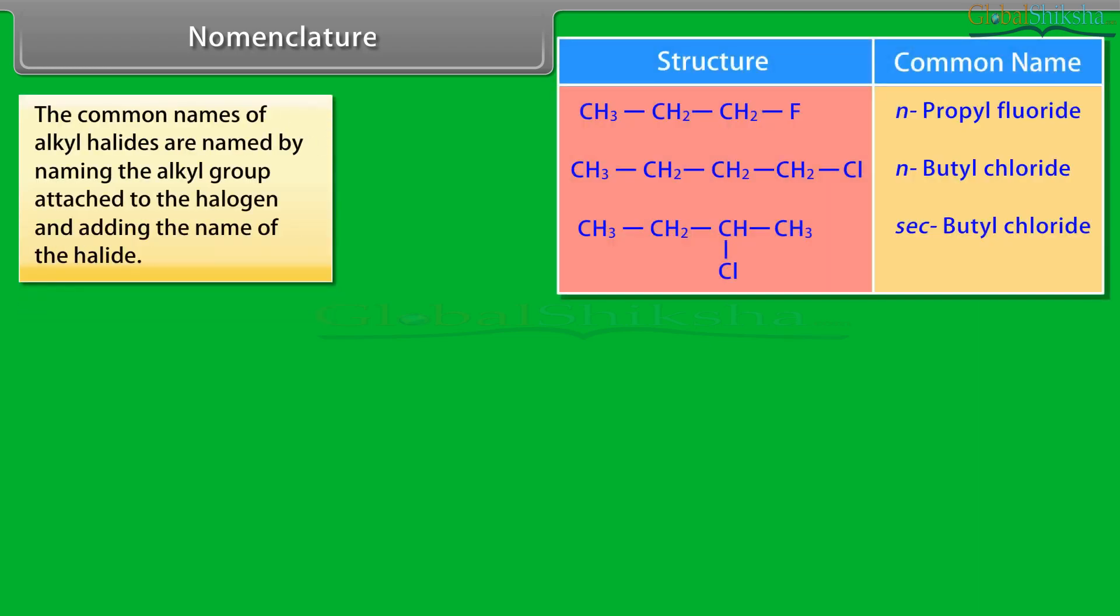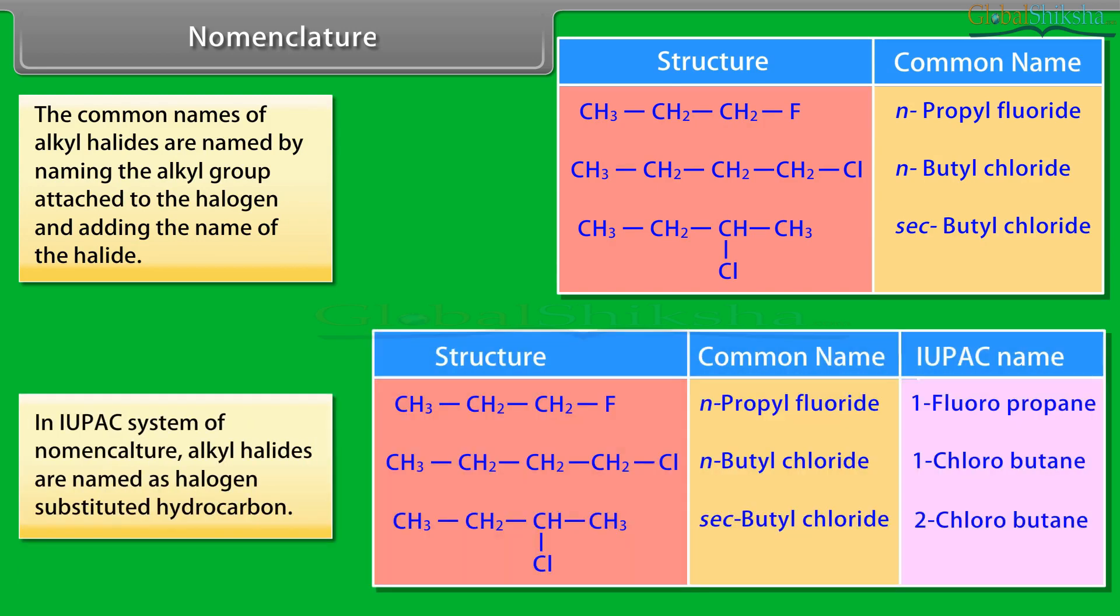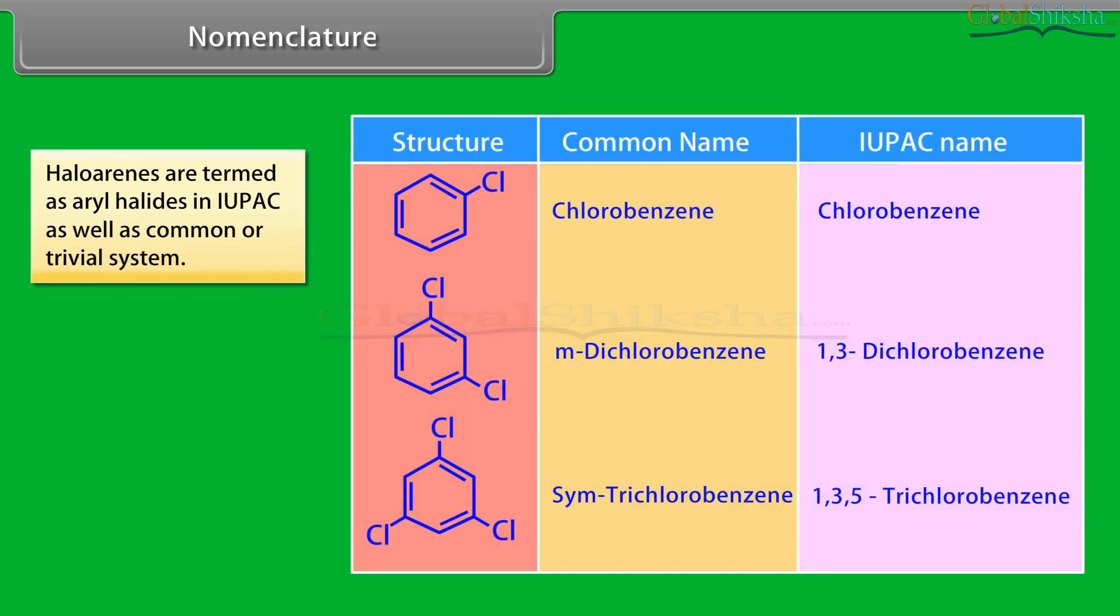The common names of alkyl halides are named by naming the alkyl group attached to the halogen and adding the name of the halide. In IUPAC system of nomenclature, alkyl halides are named as halogen-substituted hydrocarbon. Haloarenes are termed as aryl halide in IUPAC as well as common or trivial system.